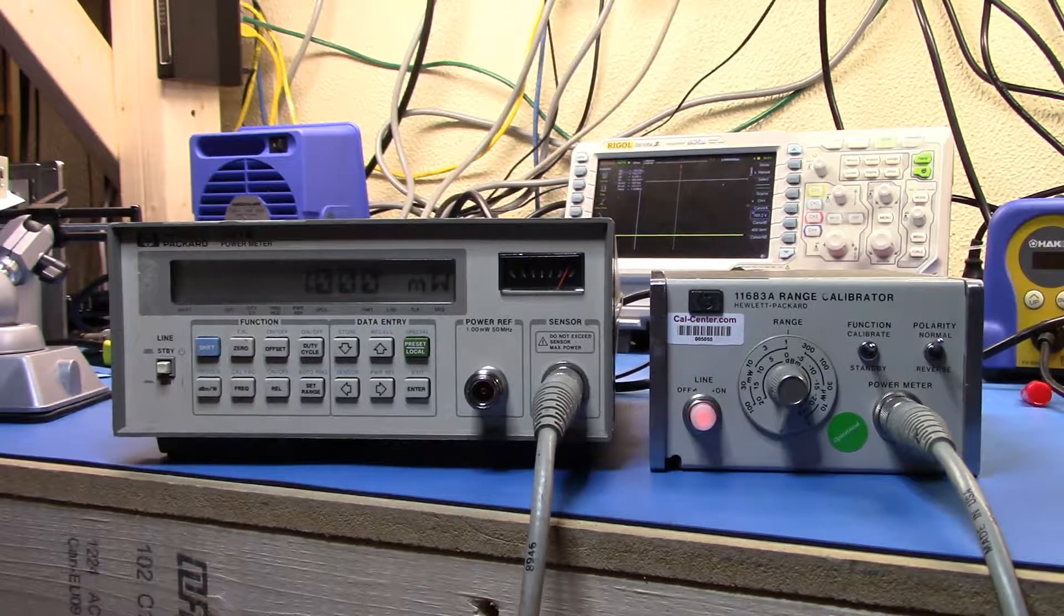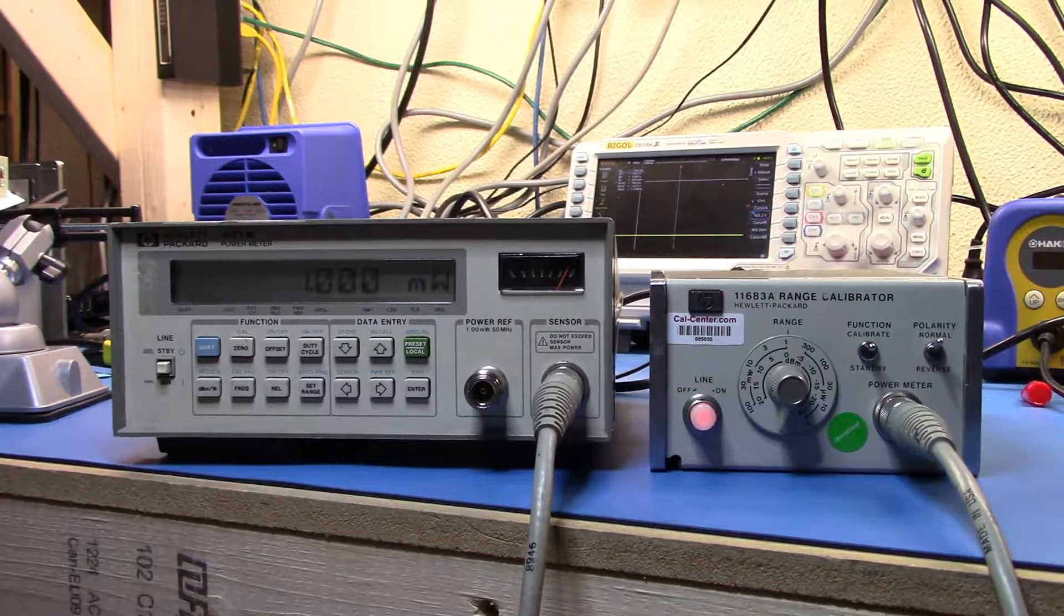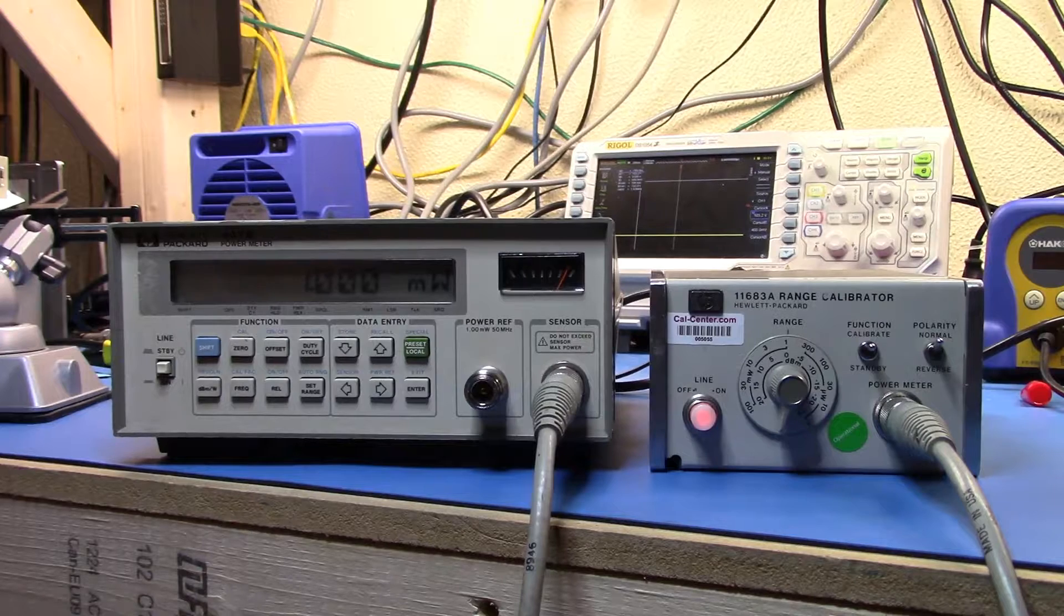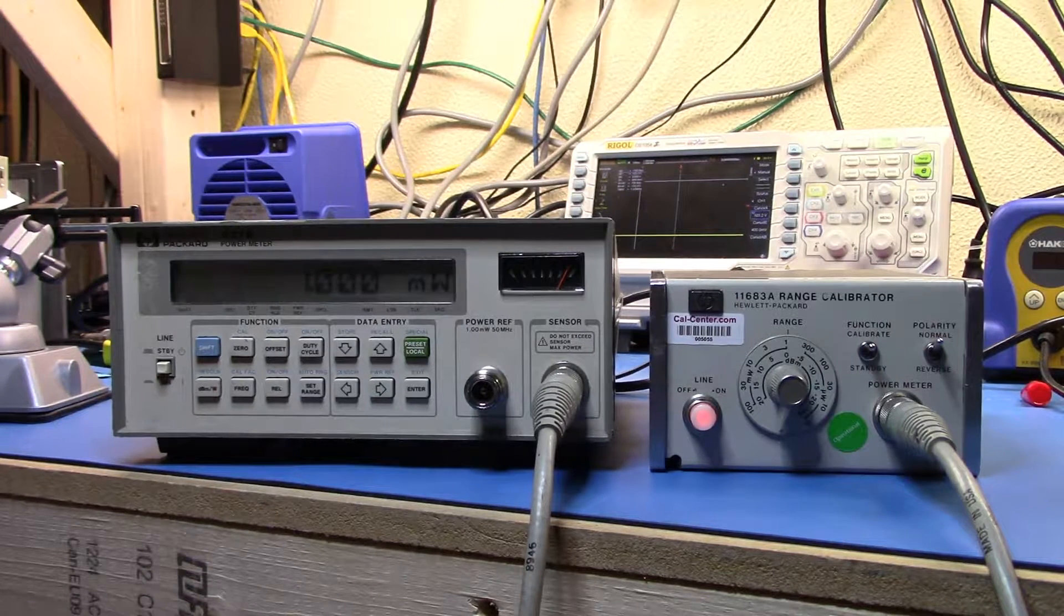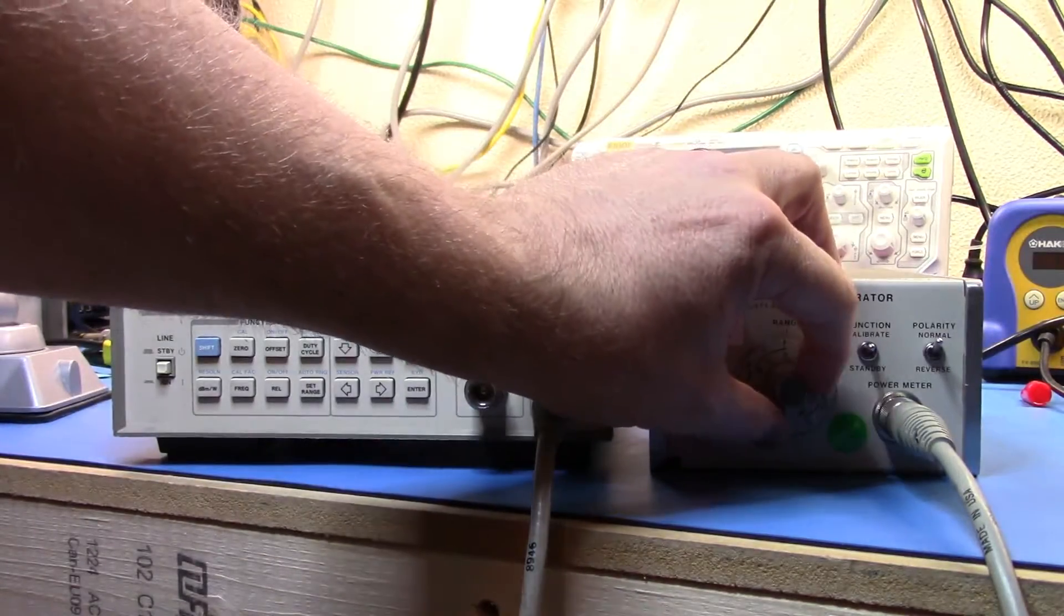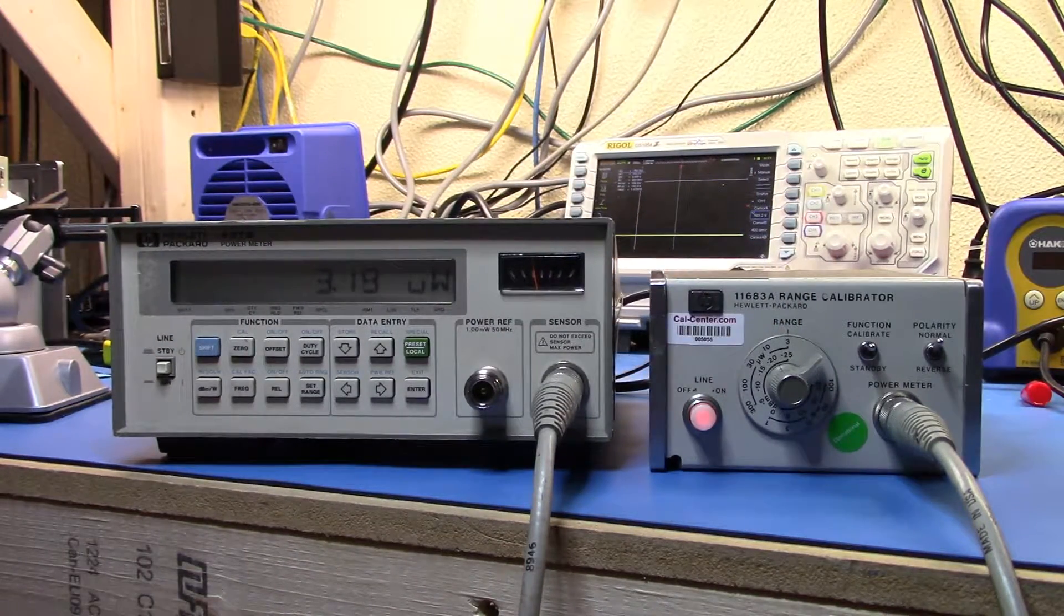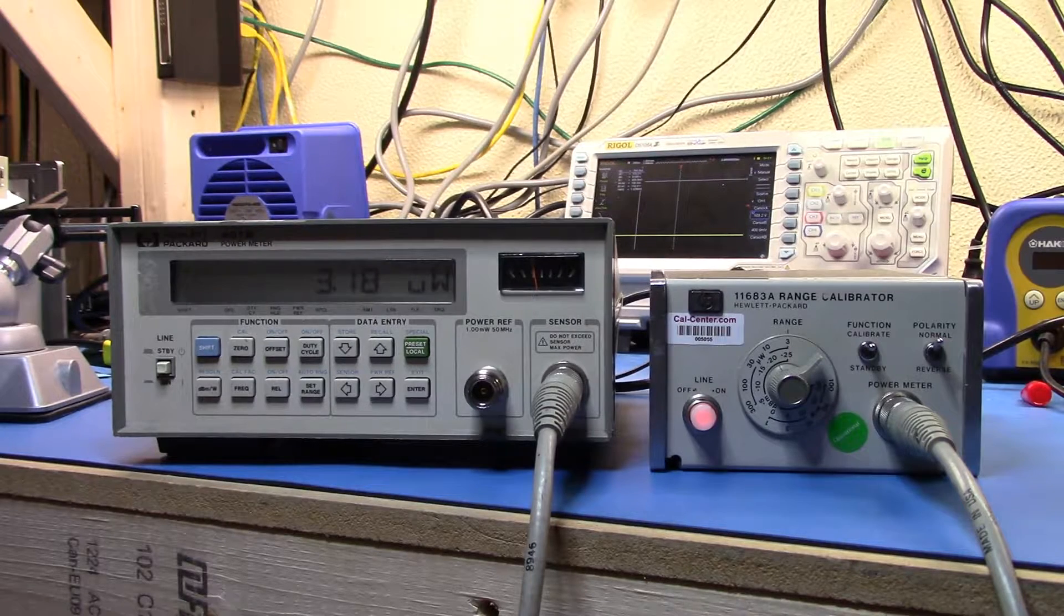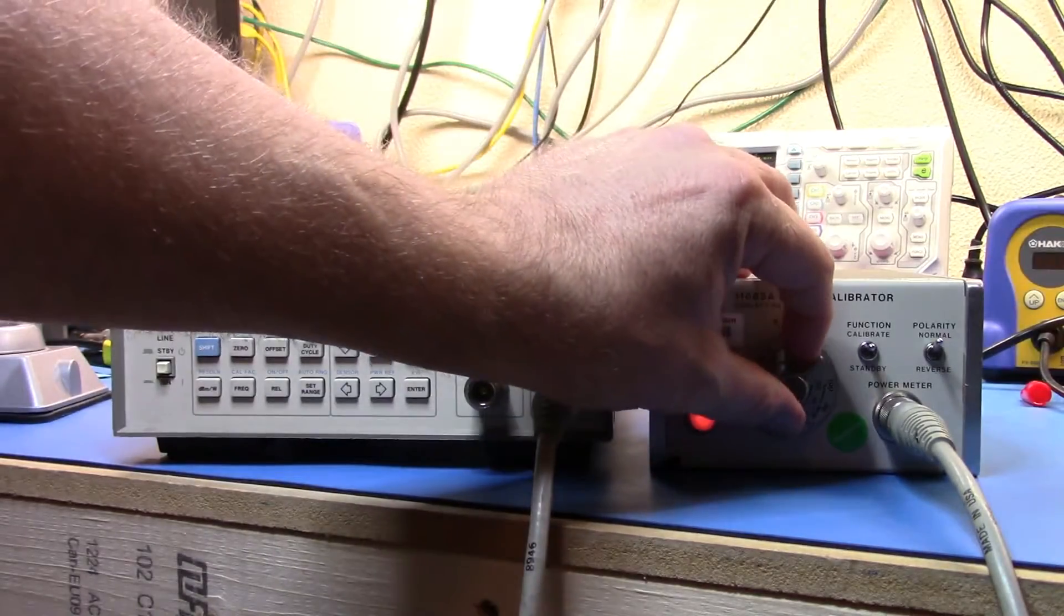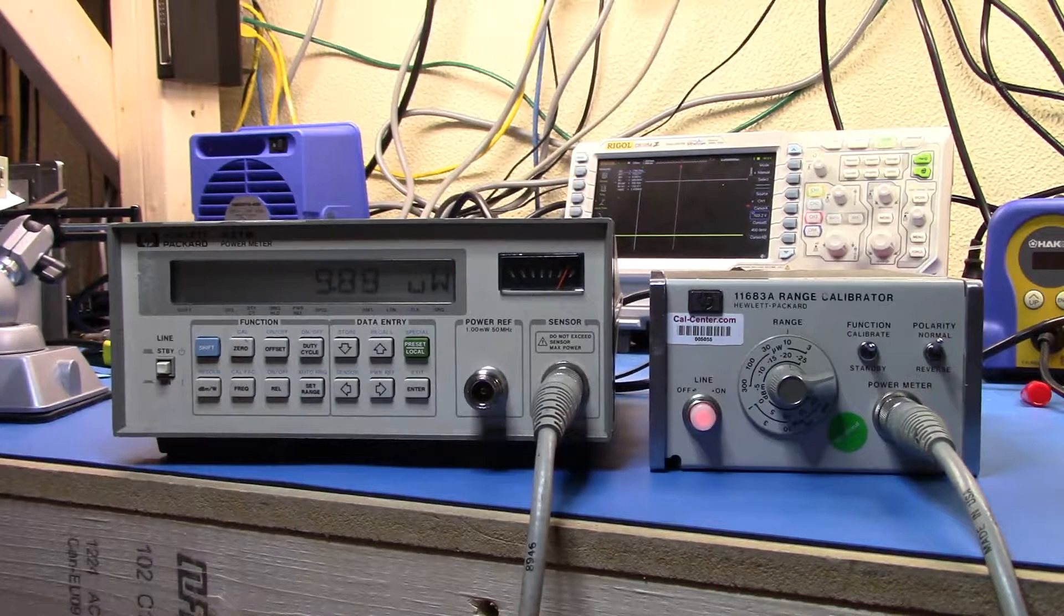And now we're going to go through the table and record what the range setting is. Okay, so let's start with 3 microwatts. And that's going to be 3.18. Let's come up to 10 microwatts. We give it time to settle.